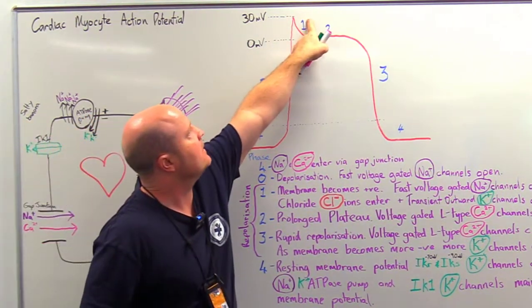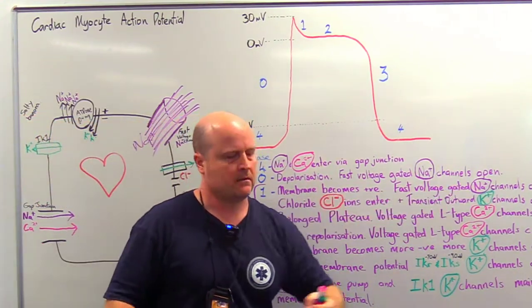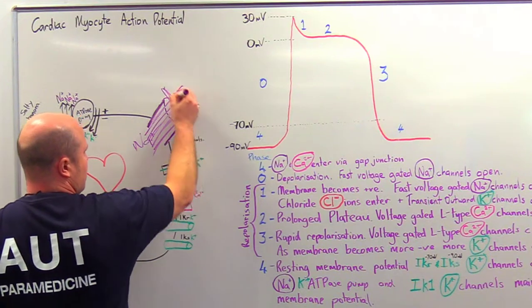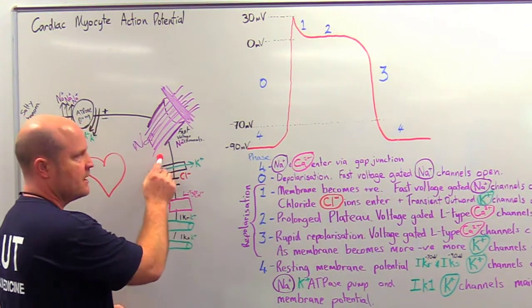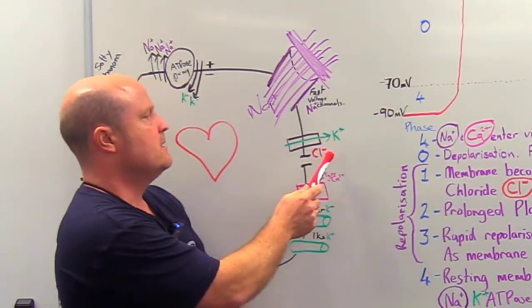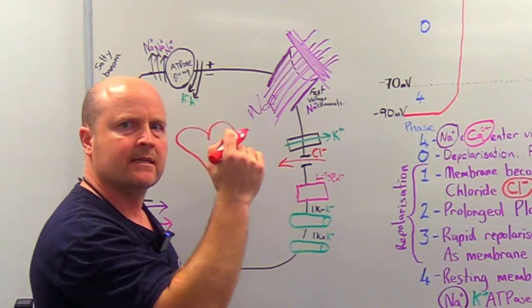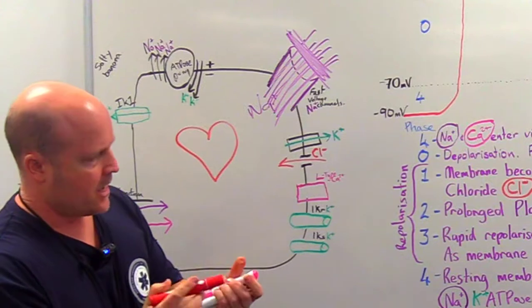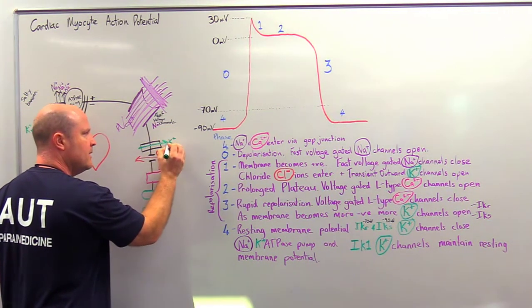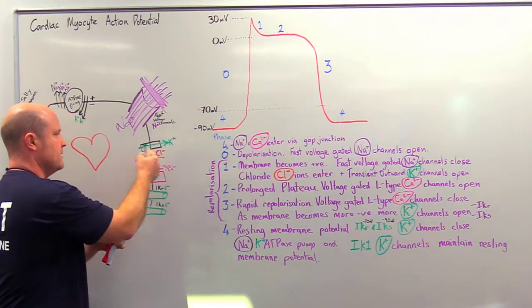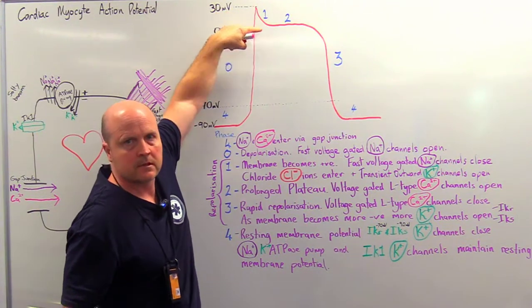Now we get to phase one and once we hit that peak of about 30 millivolts, the membrane becomes positive and our fast voltage gated sodium channels shut. Their job's done. The door is closed, no more sodium is entering by those voltage gated, fast sodium channel. Now, because the inside of the cell is now positive, opposites attract, and we have this negative ion, chloride, it enters. So if we've got negative things entering, it's going to make the inside of the cell slowly start to get a bit more negative, positive, go in the opposite direction, and we get these transient outward potassium channels opening. And here it is there. So it opens, so now potassium leaves the cell. If we've got positive things leaving and negative things coming, we can see in phase one, the cell starts to become less positive and starts to become more neutral.